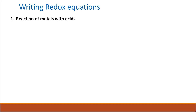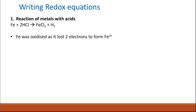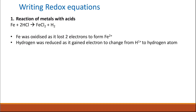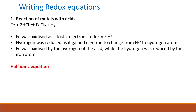The reaction of metals with an acid is one example of a redox reaction. If iron reacts with hydrogen chloride to give iron chloride and hydrogen gas, the iron is oxidized because it lost two electrons to give Fe²⁺. The hydrogen ion from hydrogen chloride changed to hydrogen gas, so it was reduced because it gained electrons.